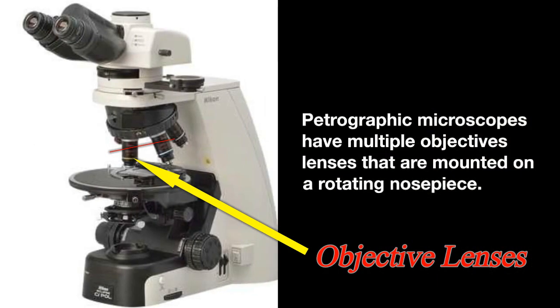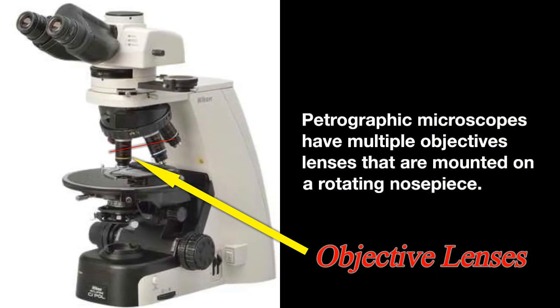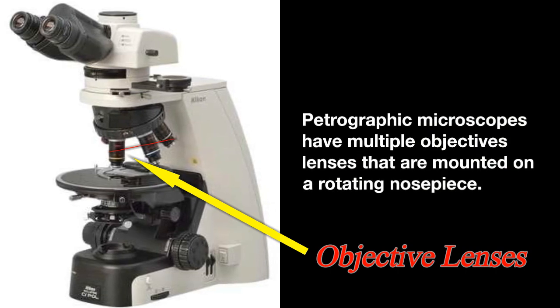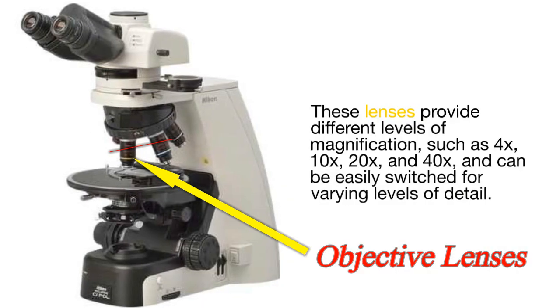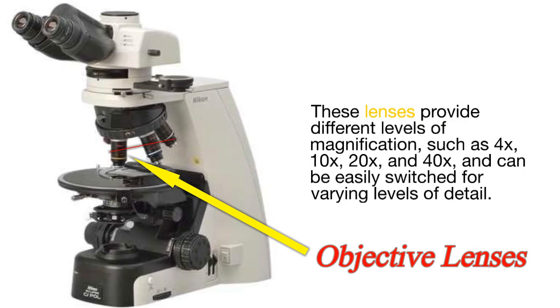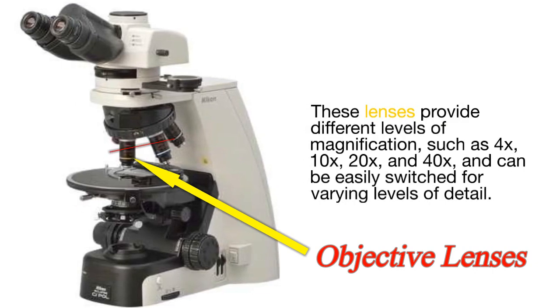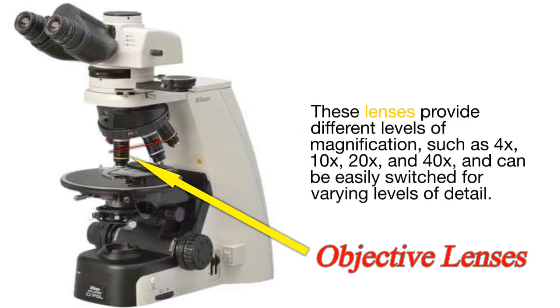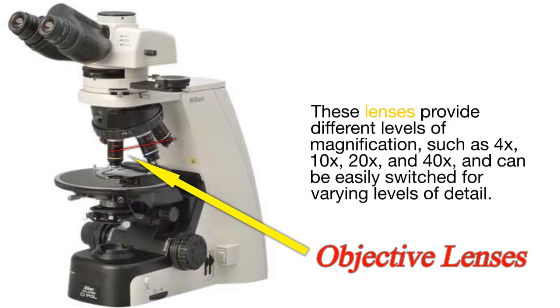Objective lenses. Petrographic microscopes have multiple objective lenses that are mounted on a rotating nosepiece. These lenses provide different levels of magnification, such as 4x, 10x, 20x, and 40x, and can be easily switched for varying levels of detail.